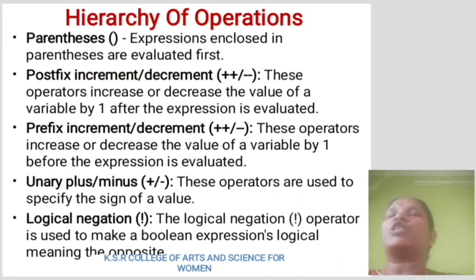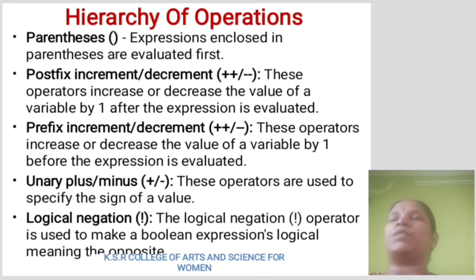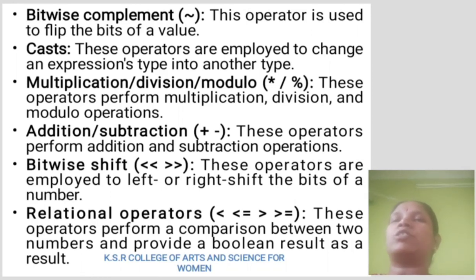Hierarchy of operations. Parentheses: exponents enclosed in parentheses are evaluated first. Post-fix increment/decrement: this operator increases or decreases the value of a variable by 1 after the expression is evaluated. Prefix increment/decrement: this operator increases or decreases the value of a variable by 1 before the expression is evaluated. Unary plus/minus: the operator used to specify the sign of the value. Logical negation: used to make a boolean expression's logical meaning the opposite. Bitwise complement: used to flip the bits of a value. Cast: employed to change the expression type into another type. Multiplication, division, modulo: perform those respective operations. Addition or subtraction: perform addition and subtraction. Bitwise shift: employed to left or right shift the bits of a number.